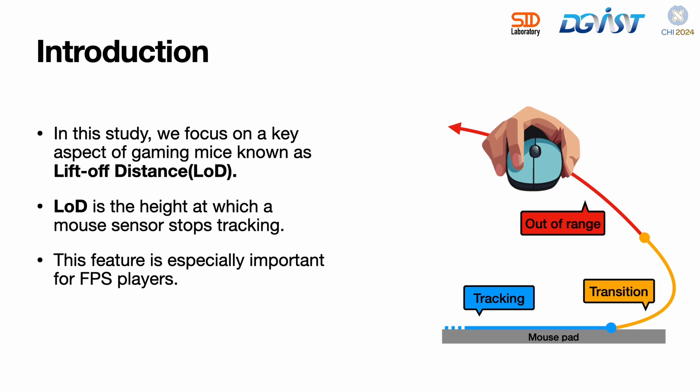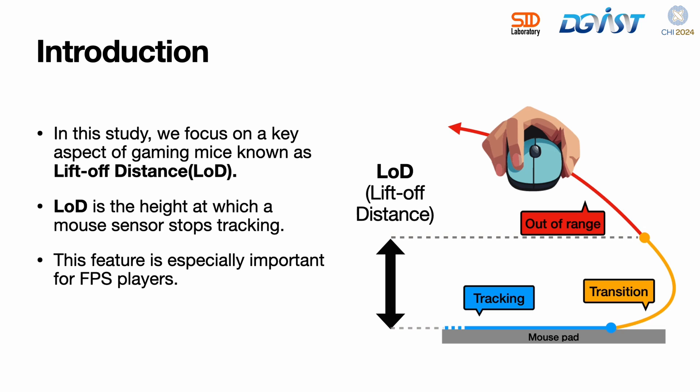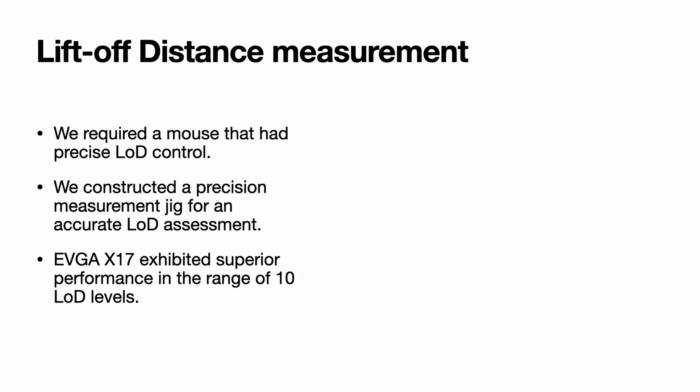In this study, we focus on a key aspect of gaming mice known as lift-off distance (LOD), which is the height at which a mouse sensor stops tracking. This feature is especially important for first-person shooter players who tend to set CD gain low for more accurate aiming, which causes unavoidable lifting or clutching.